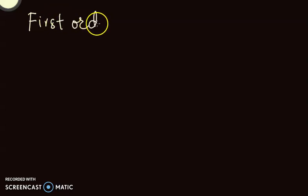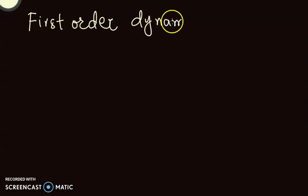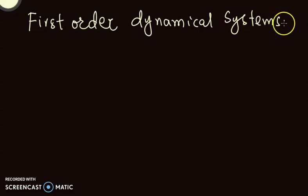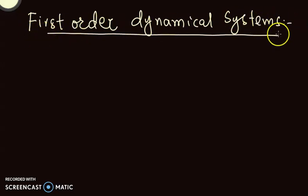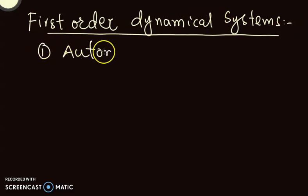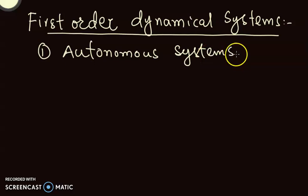Bismillahirrahmanirrahim. Let's discuss first order dynamical systems. I'll be starting with autonomous systems, more specifically dynamical systems of this form: x-dot equals f of x.